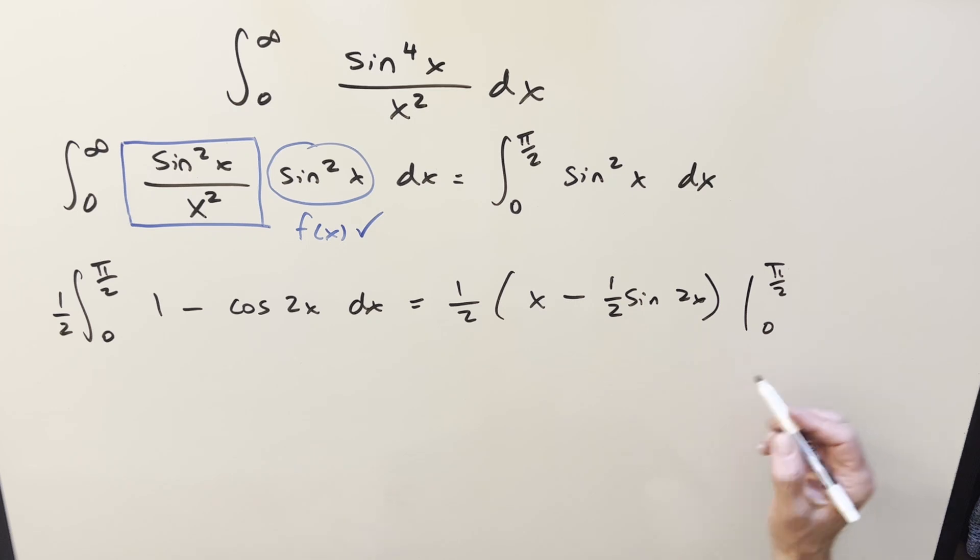When you plug in zero, sine of zero is nothing. That's going to be nothing, so don't worry about that part. Then we'll have our one half in front. Plug in pi over two. We'll have pi over two minus one half sine 2 times pi over two is going to become a pi right there.